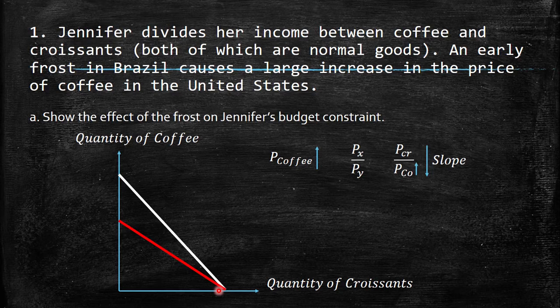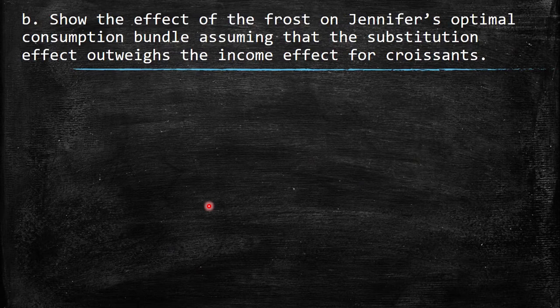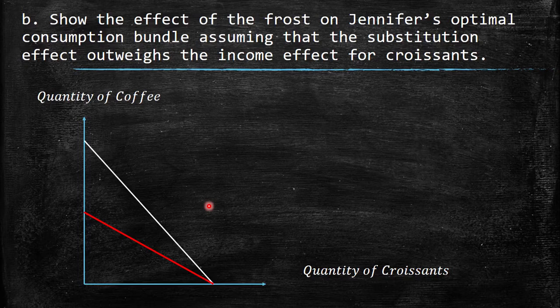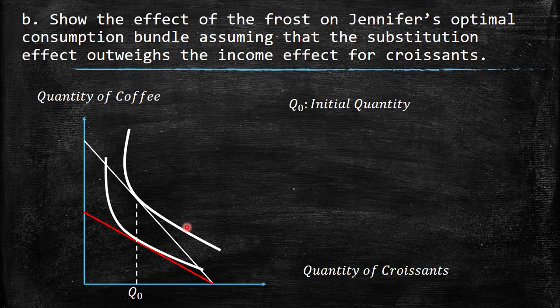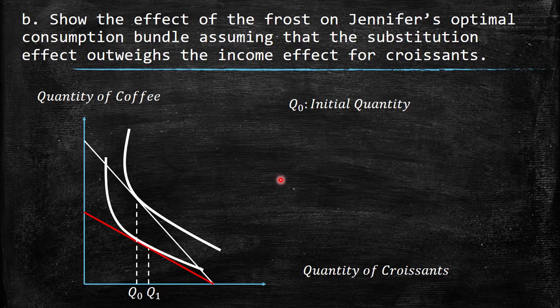The second question asks us to show the effect of the frost on Jennifer's optimal consumption bundle, assuming that the substitution effect outweighs the income effect for croissant. We start by putting the optimal bundle — a tangency between the indifference curve and the budget constraint. Q1 is the initial quantity of croissant, at the point where the slope of the budget constraint equals the slope of the indifference curve.